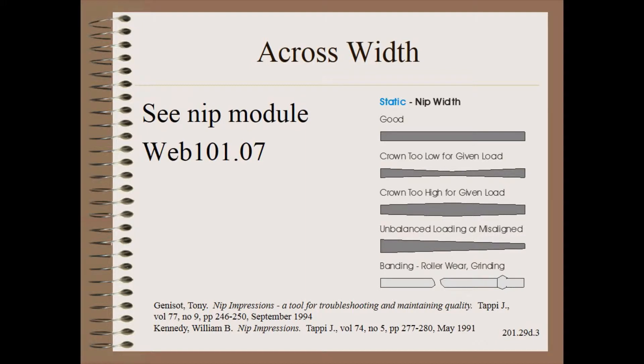There are a dozen sources of non-uniformities across the width as described in my Web 101 module. These are often easily diagnosed with one of the many nip impression products and techniques. However, in this clip we will focus on variability along the length or with time.